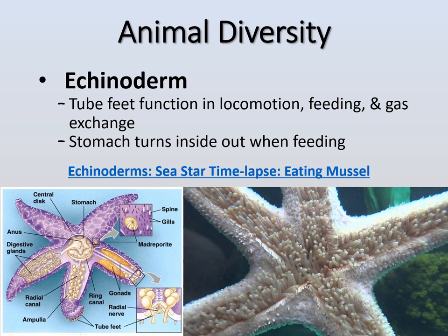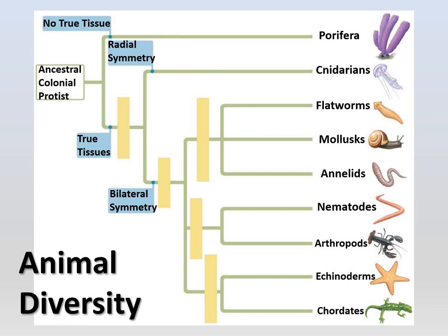Our next phylum is echinoderms — starfish, or sea stars, because they're not really fish. They have little tube feet on the bottom of their limbs that function for locomotion, feeding, and even gas exchange, almost like little lungs. In the middle of the sea star, they actually have a stomach that turns inside out when feeding. They move faster than you'd think, as seen in a time-lapse of sea stars eating a mussel.